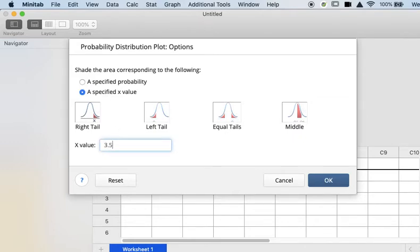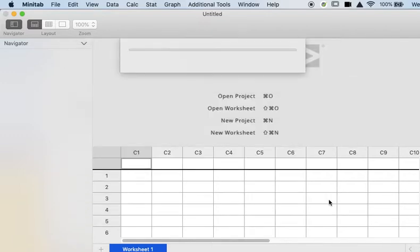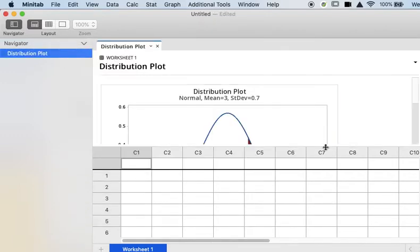So I'm going to select Right Tail and enter 3.5 in the X value box. Then I click OK and click OK again. And here's my graph.